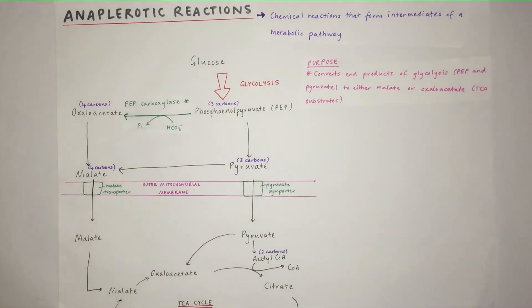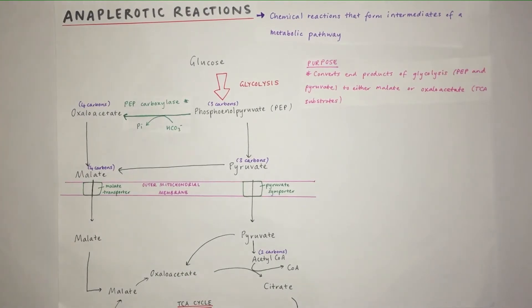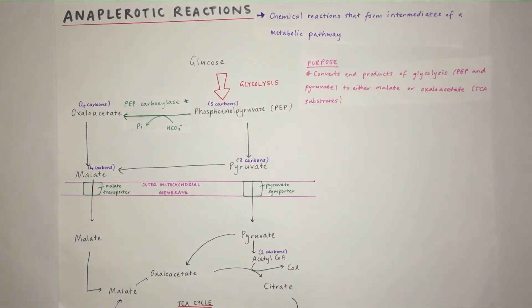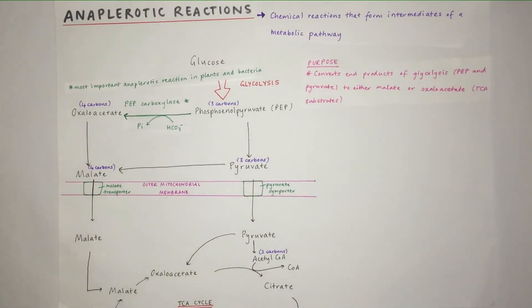PEP becoming oxaloacetate by PEP carboxylase with HCO3 becoming a phosphate. This is the most important anaplerotic reaction in plants and bacteria. From a medical perspective, I would say this isn't really relevant. If you're doing a medical degree, I wouldn't really remember this one.